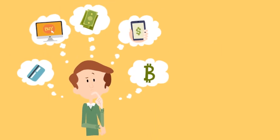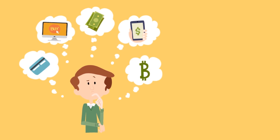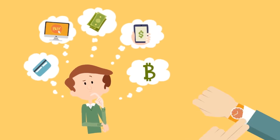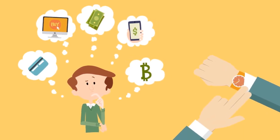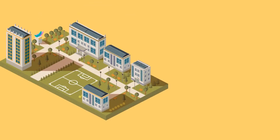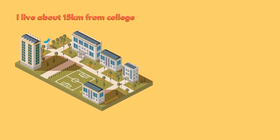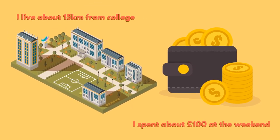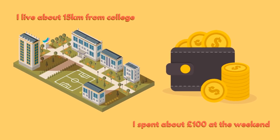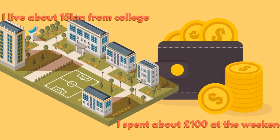Rounding and estimating are two important skills that make numbers much easier to work with. They allow us to work problems out very quickly and communicate approximate values. I live about 15km from college. I spent about £100 on the weekend. These are both examples of estimating using approximate values.